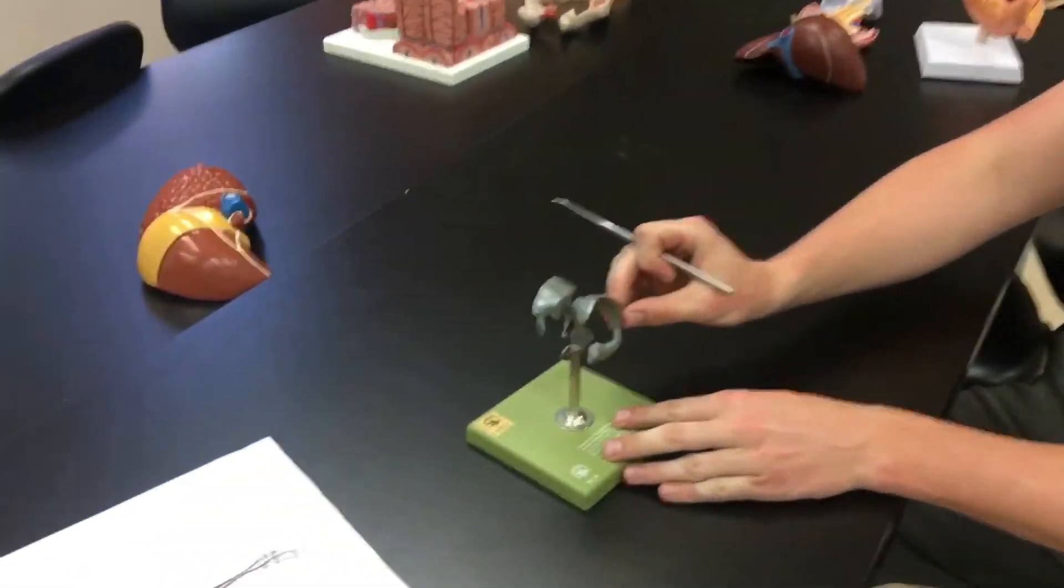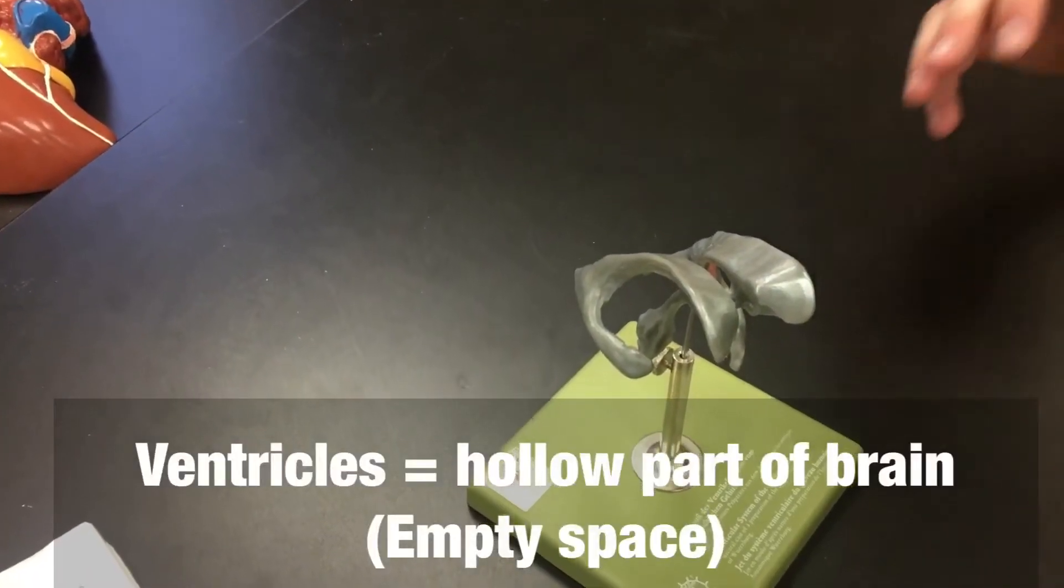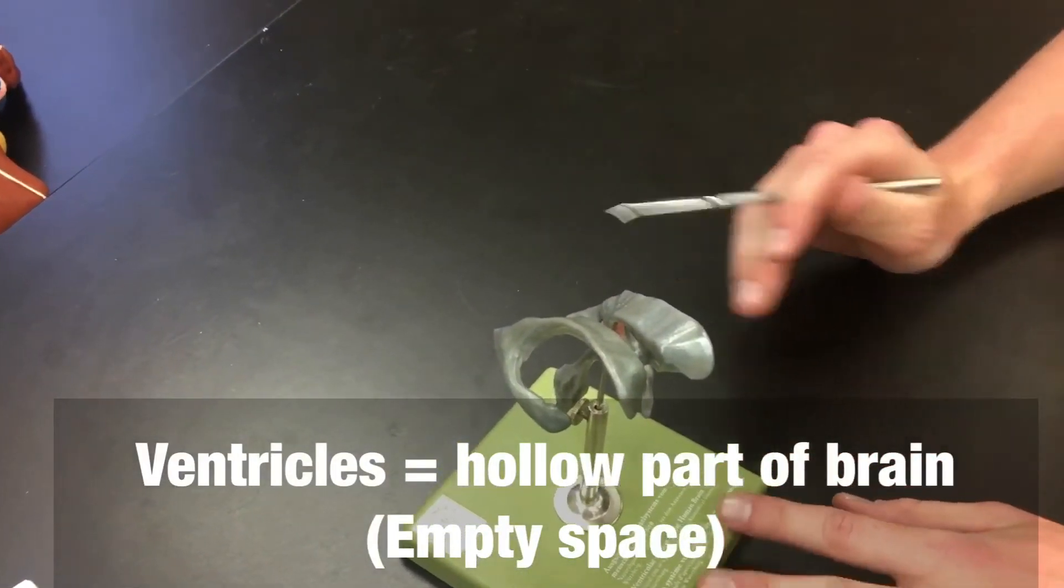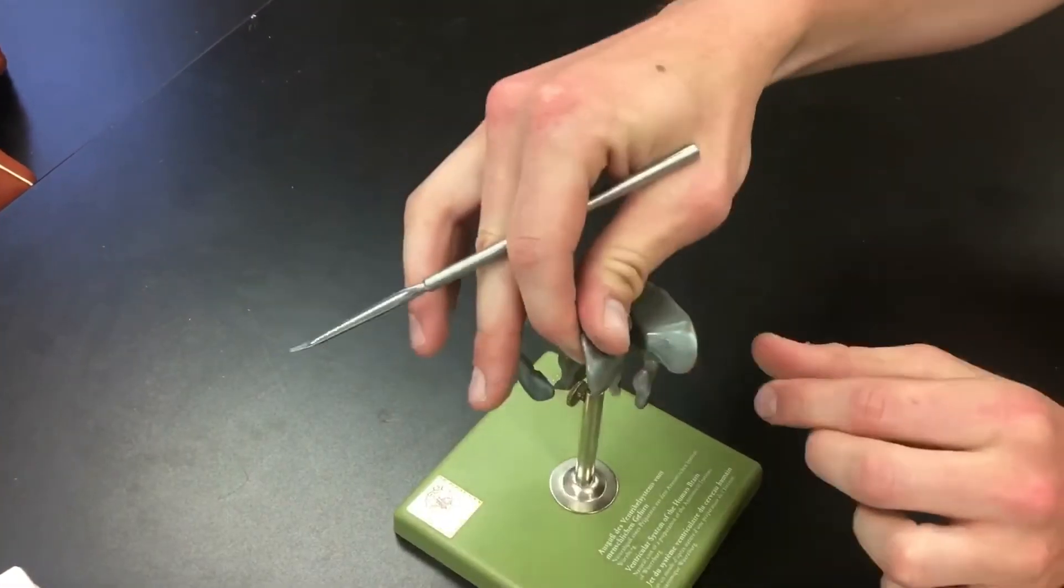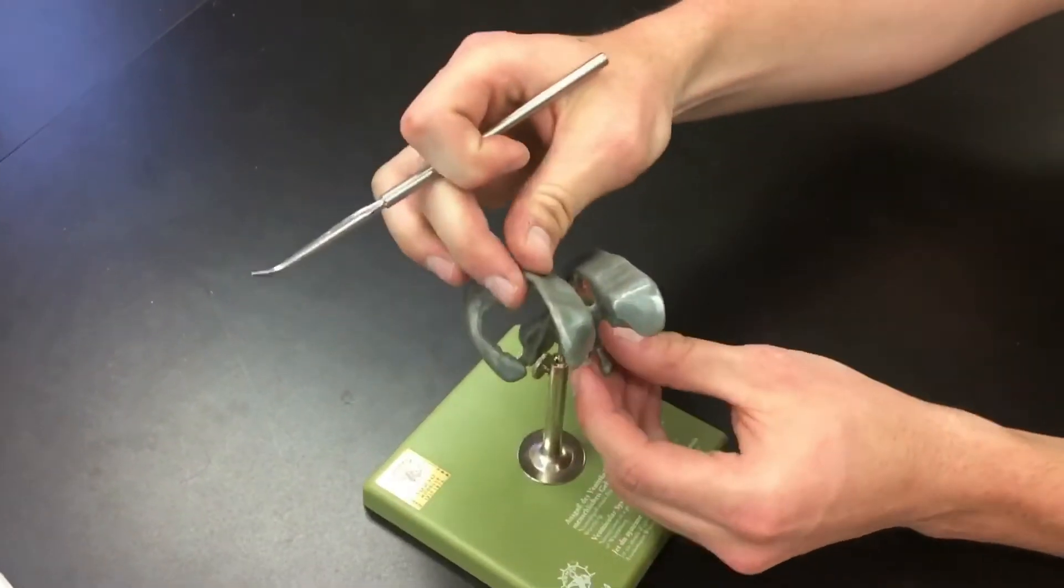So we look down here, what we can see with the ventricle model is first off, this is a casting or molding of empty space that would be in the brain. So when I touch part of this model, it would actually represent empty space in the brain.